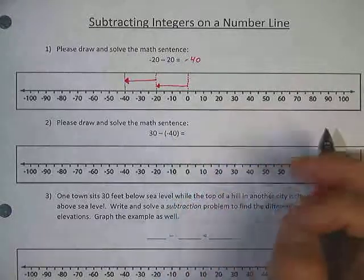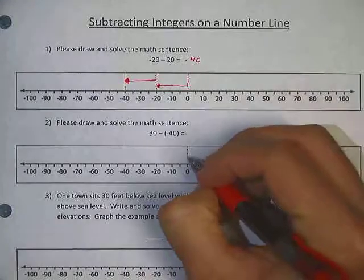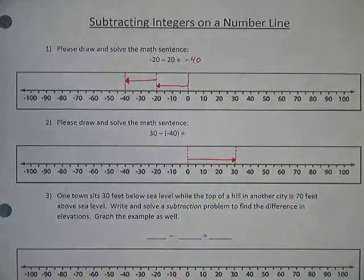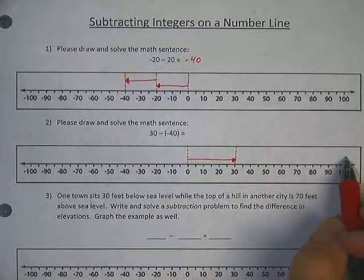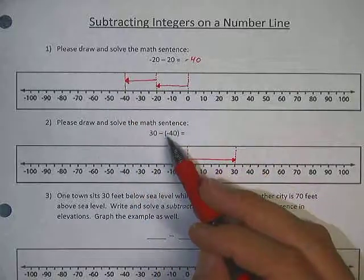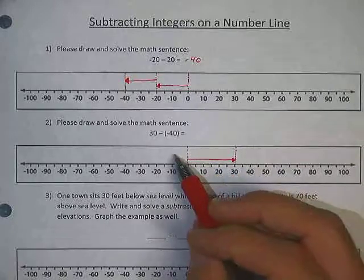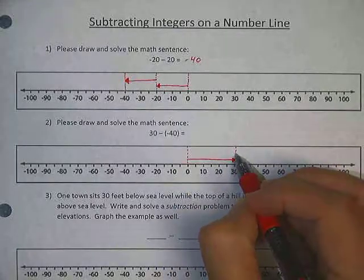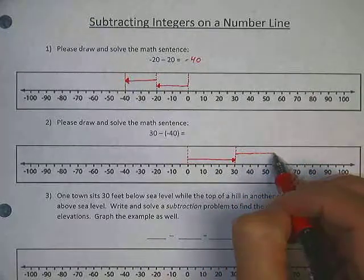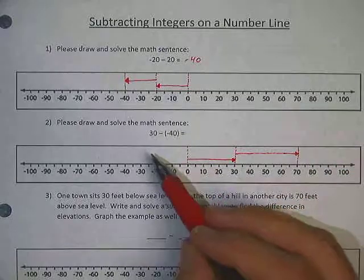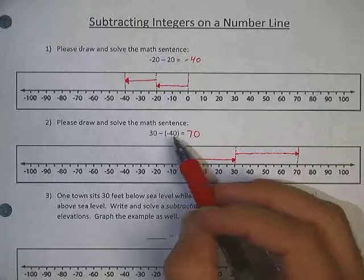The next one: please draw and solve the math sentence 30 minus negative 40. We have a minus and a negative — what's going to happen? Start at zero and go up to 30. Draw your line. Now I have to minus negative 40. If I was minusing positive 40, I'd be going down — because 100 minus 40 is 60, or 40 minus 40 is zero. So subtracting a positive goes down. But negatives are always opposites. So if I'm taking negative 40 away, it has to go the opposite way — to the right, 40 spots. From 30, I go 40 spots: 10 to get to 40, 10 to get to 50, 10 to get to 60 — that's 30 so far — and 40 gets me all the way up to 70. So my final answer is 70.